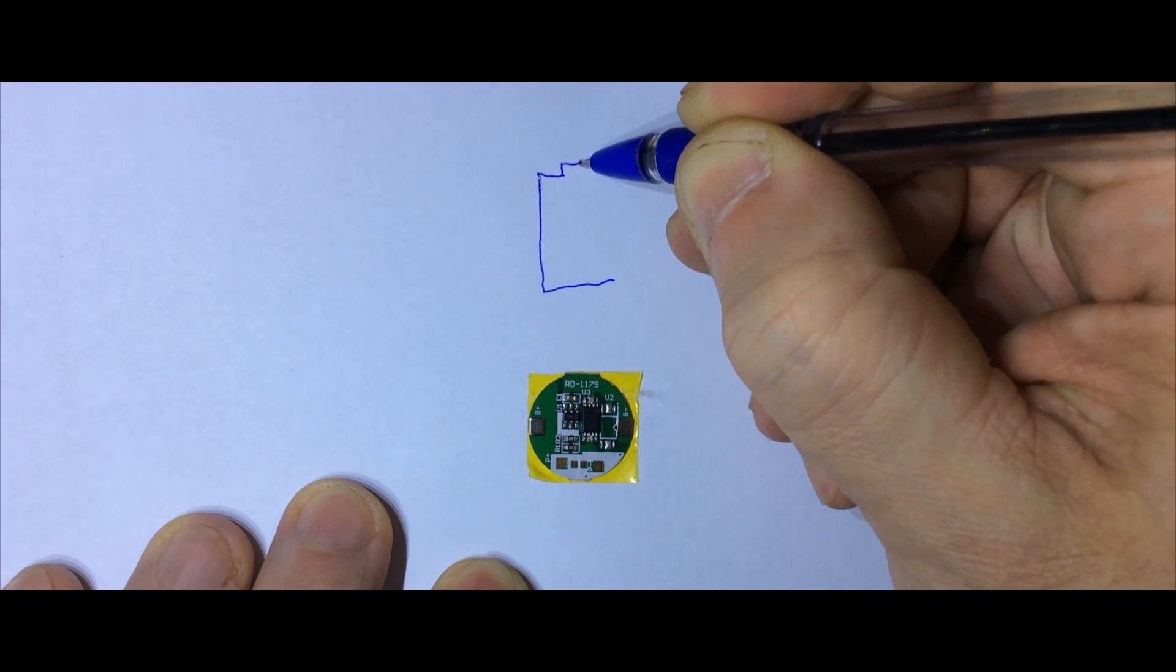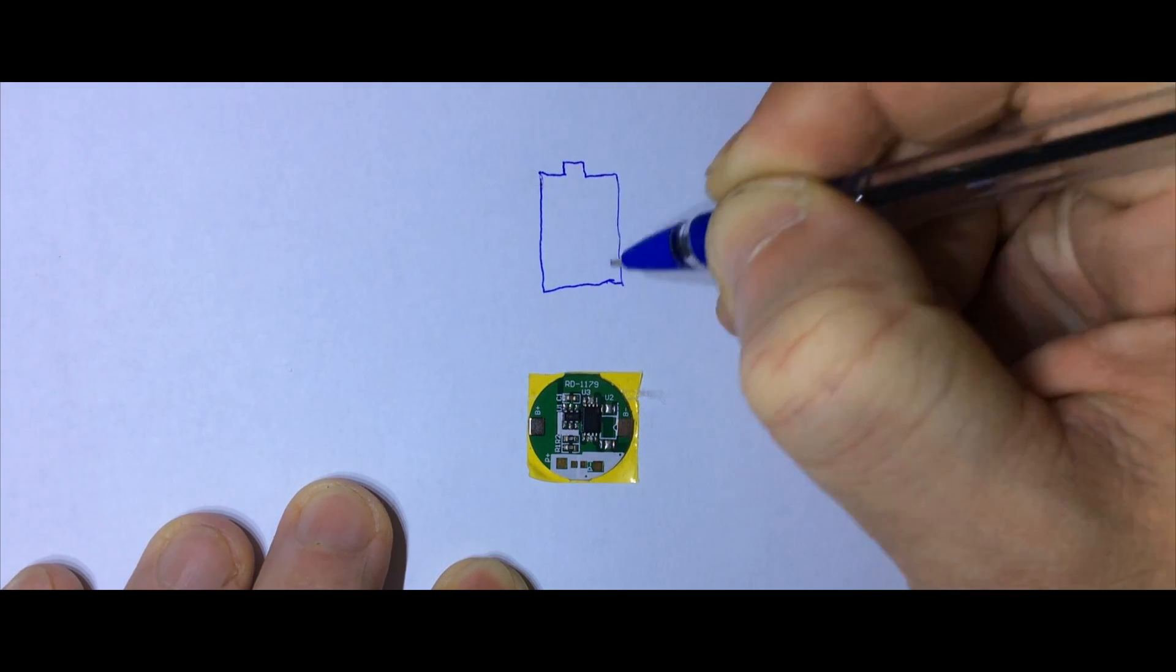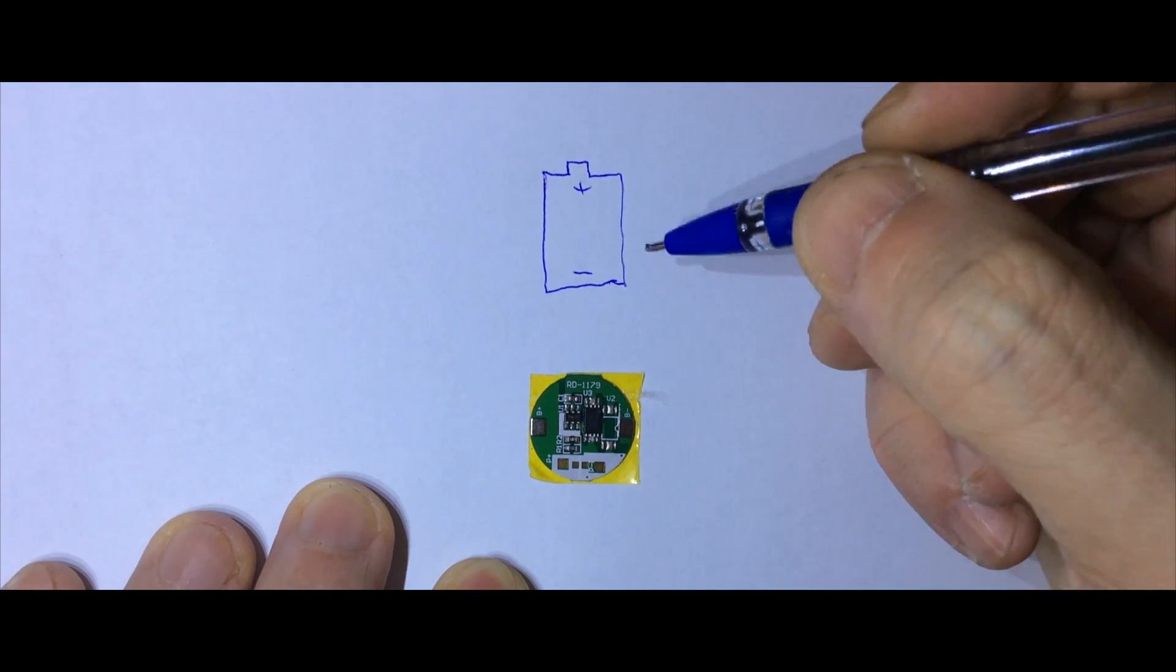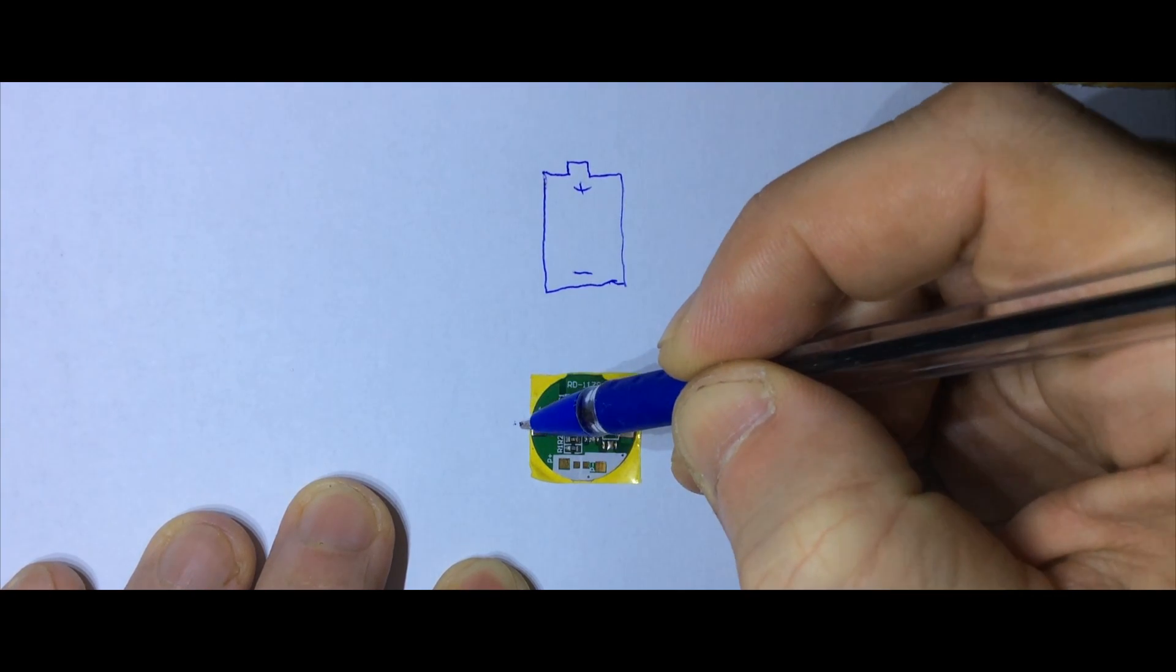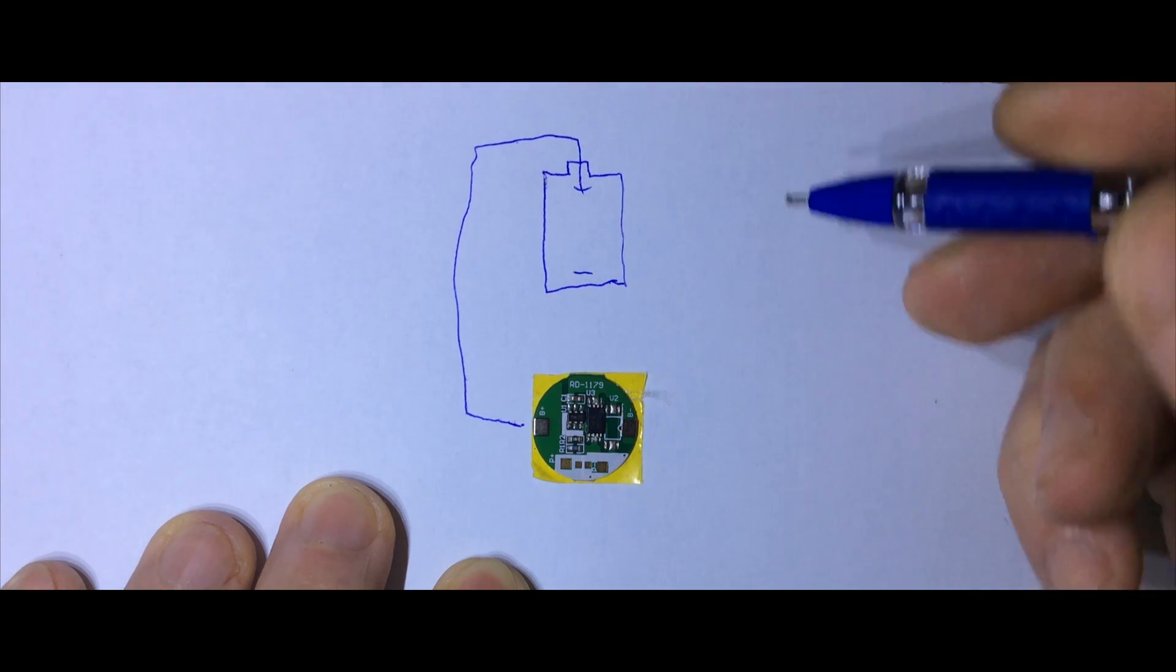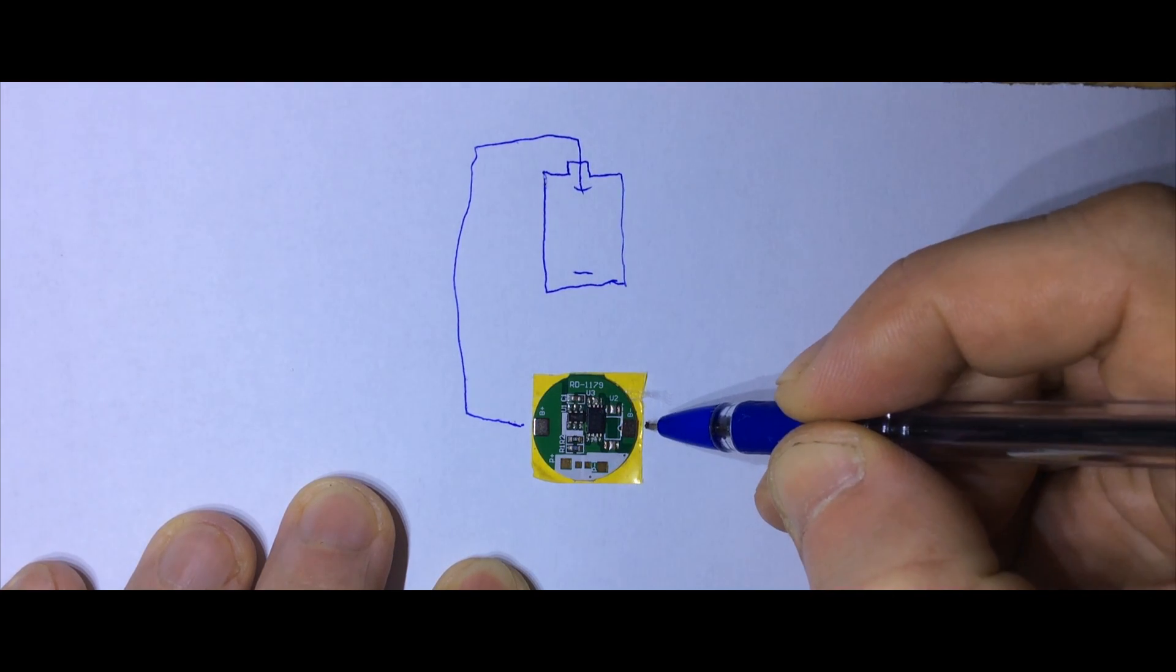This is our battery, plus and minus. B plus and B minus are connected to the corresponding terminals on the accumulator.